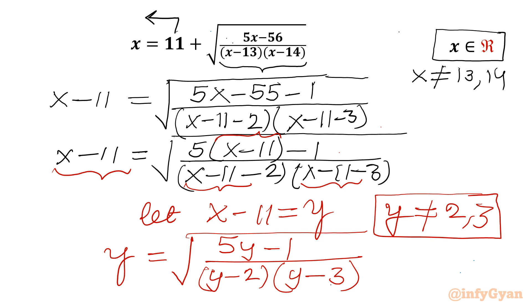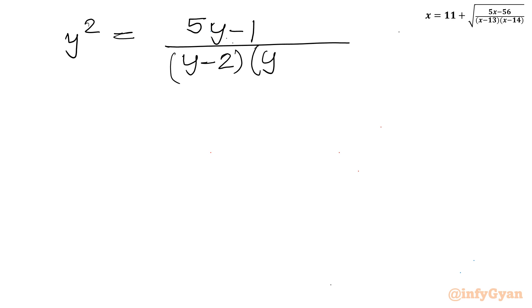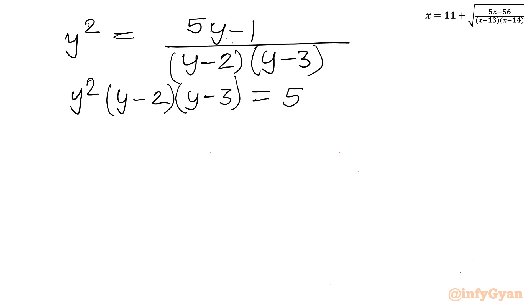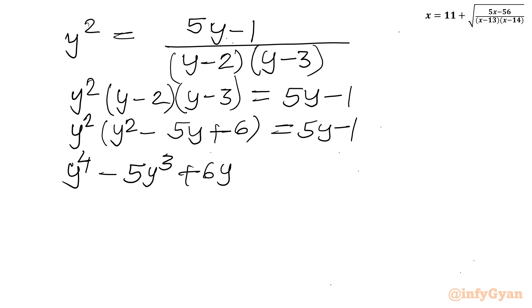Now I will consider squaring and cross multiplication. So I can write y squared equal to (5y minus 1) over (y minus 2)(y minus 3). Cross multiplying: y squared times (y minus 2)(y minus 3) equal to 5y minus 1. Simplifying the LHS gives y squared times (y squared minus 5y plus 6), and the RHS is 5y minus 1. Further simplification yields y⁴ minus 5y³ plus 6y² minus 5y plus 1 equal to 0.